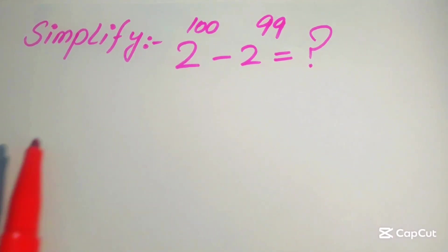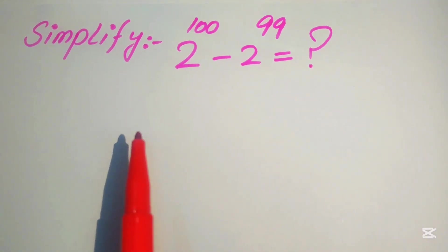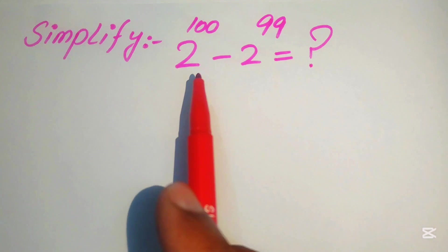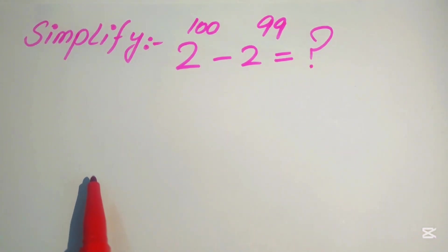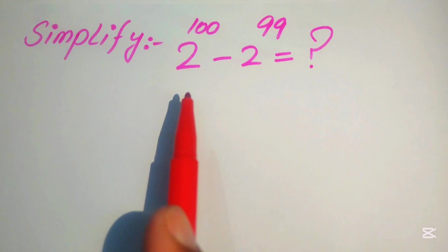Hello everyone, how to simplify this nice algebraic expression if we have 2 to the power of 100 minus 2 to the power of 99. Can you calculate this algebraic expression in your head within 10 seconds?